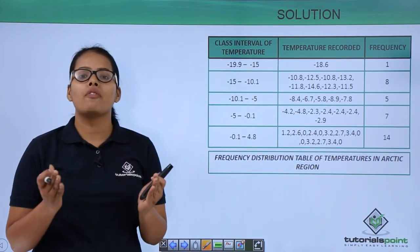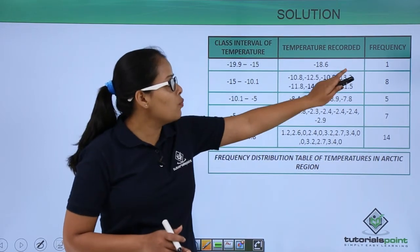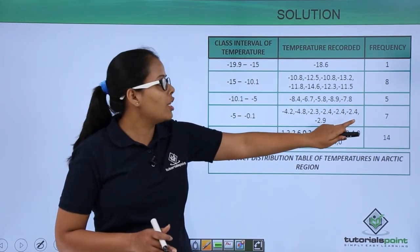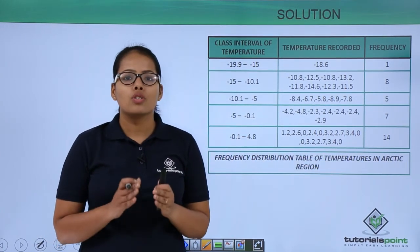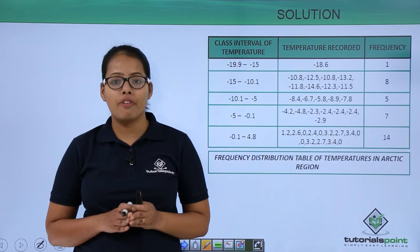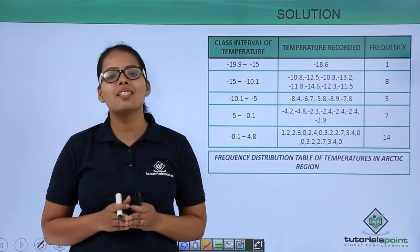And you know that the total number of observations is the sum of these frequencies. Adding 1, 8, 5, 7, and 14 gives you 35. So the total frequency is 35, which means the number of observations in this experiment is 35.